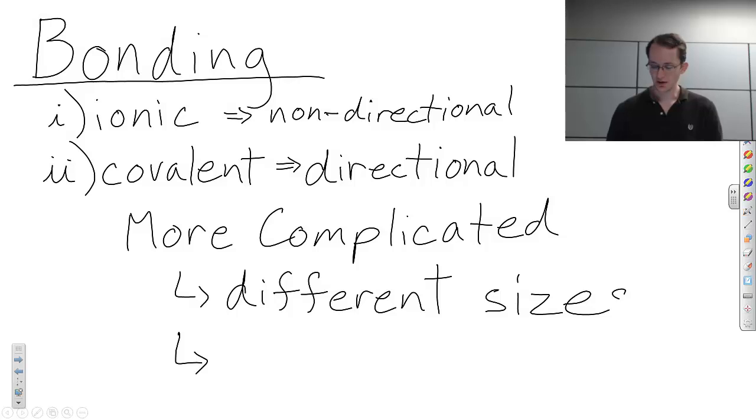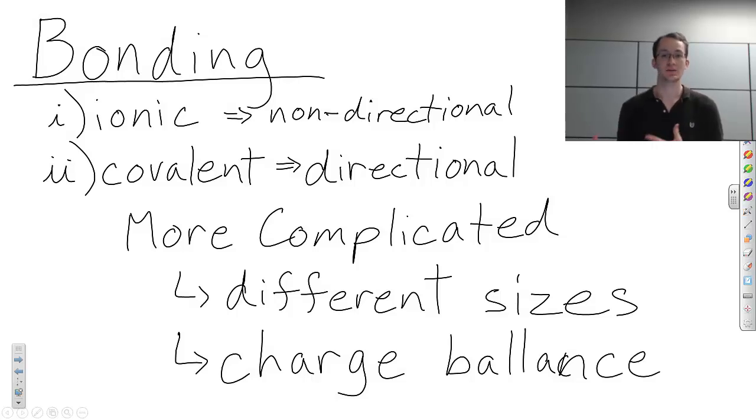We will also see that charge balance is a huge issue. Ceramics aren't positively or negatively charged electrically at the macroscopic scale. And that's because the individual atoms and ions congregate in such a way so that you have charge neutrality. You have just as many positive charges as negative charges and therefore there's no net charge on the system.